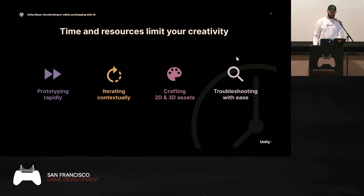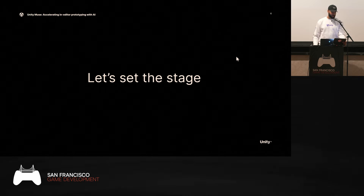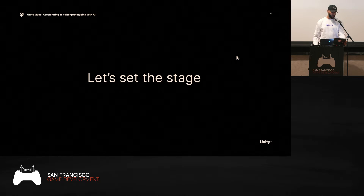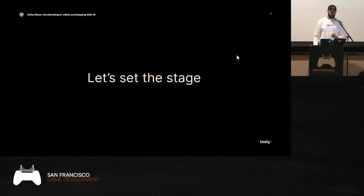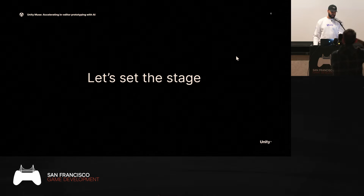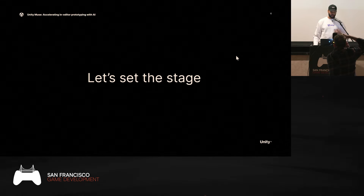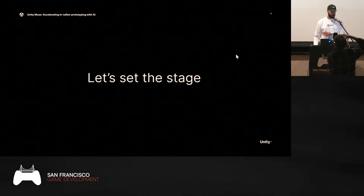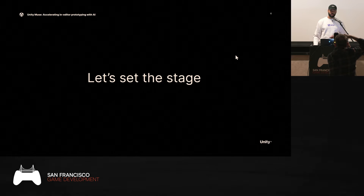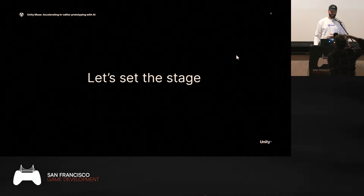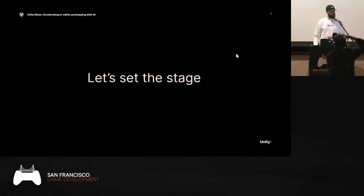We won't have too many slides — the goal is to get into the editor and show you some live stuff. Let's set the stage: imagine we are a game studio developing a simple iteration of our current game, introducing a new challenge. Our player needs to collect a golden vase located inside a temple patrolled by a guard. We're going to use all the Muse features to show you how you can save time and prototype your games faster.